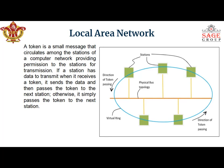A token is a small message that circulates among the stations of a network, providing permission to transmit. If a station has data to transmit when it receives the token, it sends the data and then passes the token to the next station. Otherwise, it simply passes the token to the next station. If the second station also has no data, it passes the token again. If the third station has data to send, it removes the token and puts the data in the logical ring.